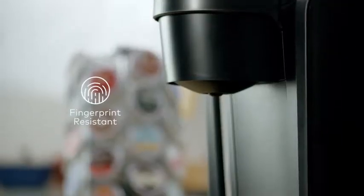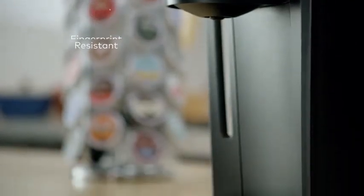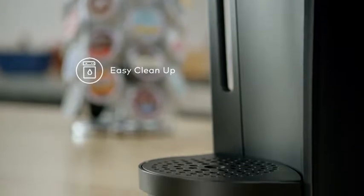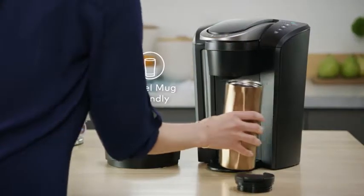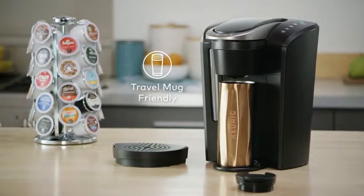The K Select Brewer is made with fingerprint resistant materials and the drip tray is top rack dishwasher safe for easy cleanup. Simply remove the drip tray to accommodate a travel mug.